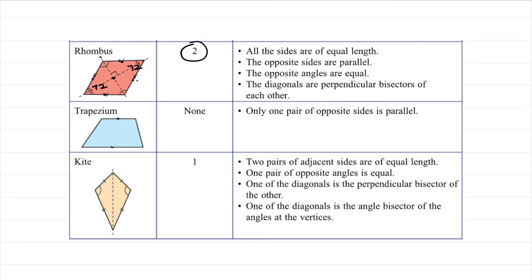The fifth quadrilateral is a trapezium. It is simple — it has only one characteristic: only one pair of opposite sides is parallel. That's the only parallel pair, and you won't find an axis of symmetry. The last one is a kite — 'layang-layang'. A kite has only one axis of symmetry, which is the vertical line through the middle.